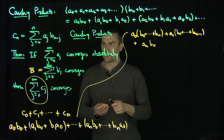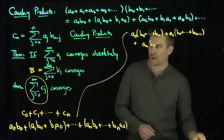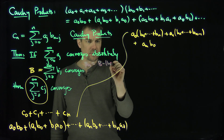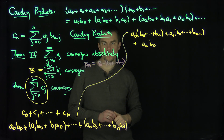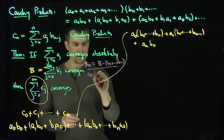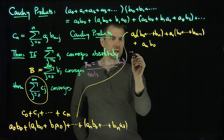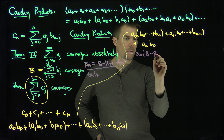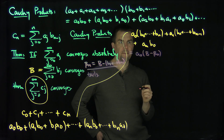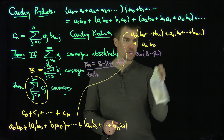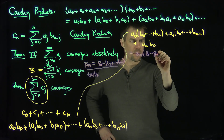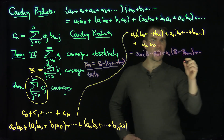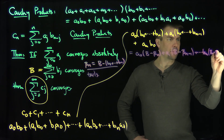Now let's define some new numbers — let's define the tails. Let βn equal B minus the nth b partial sum, so that's B minus (b0 + ... + bn). Those are the tail terms. So what I have now is: a0 times (B − βn), plus a1 times (B − β(n−1)), and so on, all the way down to an times (B − β0).